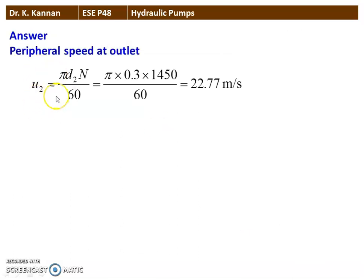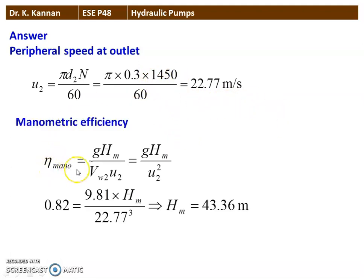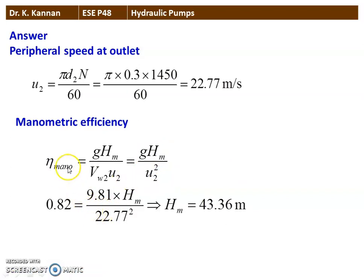The peripheral speed U2 equals pi D2 N divided by 60. Substituting numerical values: pi into 0.3 into 1450 divided by 60 equals 22.77 meters per second. The manometric efficiency eta_manometric equals g·H_M divided by V_W2·U2. For radial discharge, V_W2 equals U2, so this becomes g·H_M divided by U2 squared. Substituting: 0.82 equals 9.81 into H_M divided by 22.77 squared.